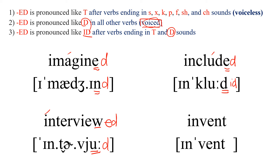Next one: INVENT. Stress on the second syllable, and this ends in a consonant, so we put ED to make it past. Since it's a T ending, we add ED here. Read: INVENTED. After N, you can also say INVENTED.